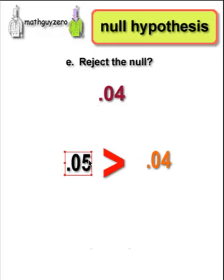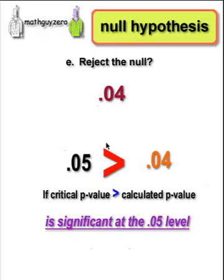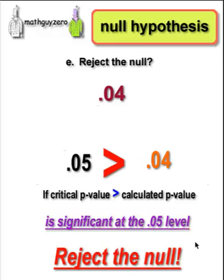And our critical value, our cutoff value, is greater than our calculated value. Therefore, we say that the data is significant at the .05 level, and we reject the null hypothesis. That's it. MGC out.